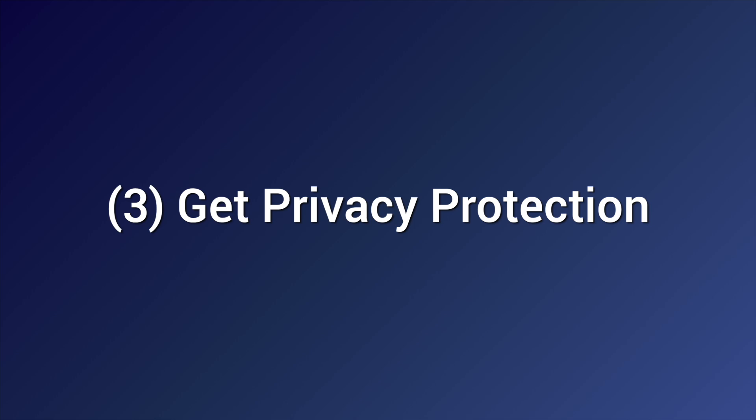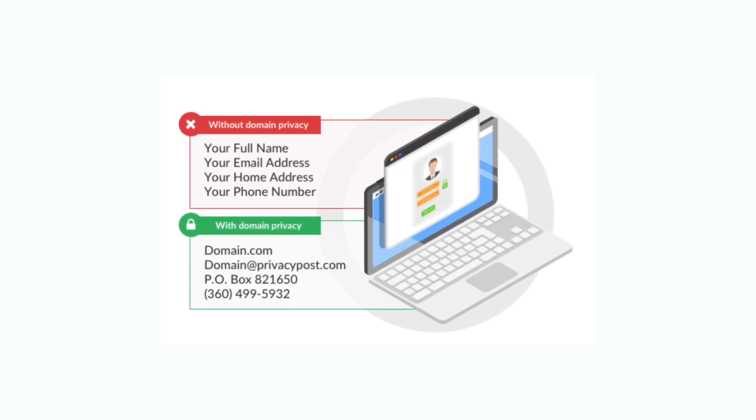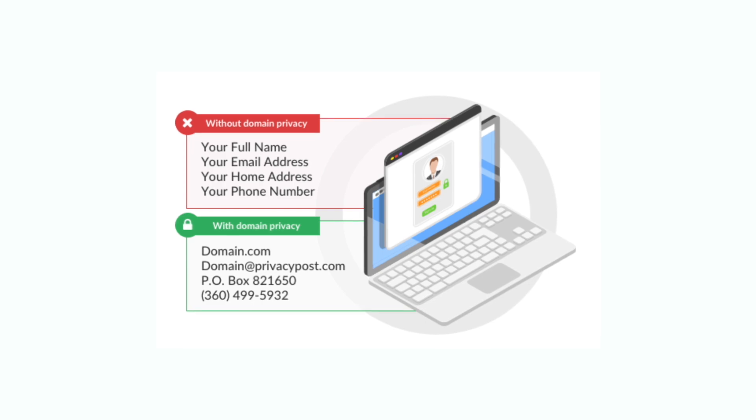Third, I recommend getting privacy protection — this should be free. What it does is keep your personal or business information private. When you buy a domain, there is a database that lists the owner's name, address, email, and phone number publicly. If you don't have privacy protection, your information will be listed publicly on the internet. This is especially important if you use your home address and mobile phone number when buying your domain.